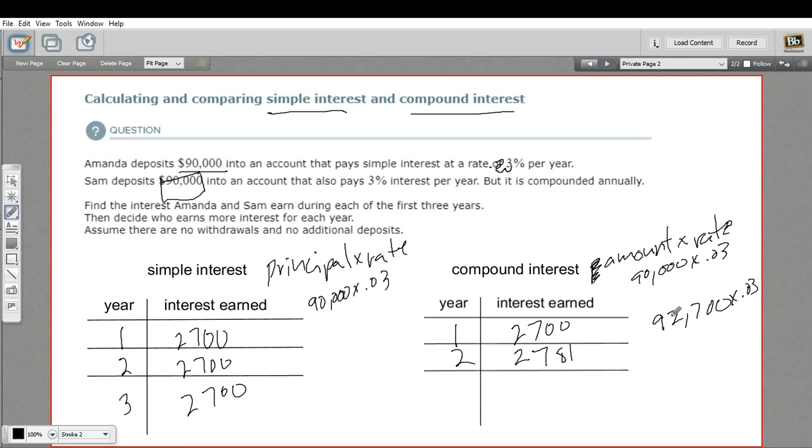And then this gets added to our total. So it looks like our new total here is 95,481. And then to get the interest in year three, we multiply that times our rate. And I'm getting 2,864.43. So in every successive year, the interest gets bigger and bigger with compound interest.